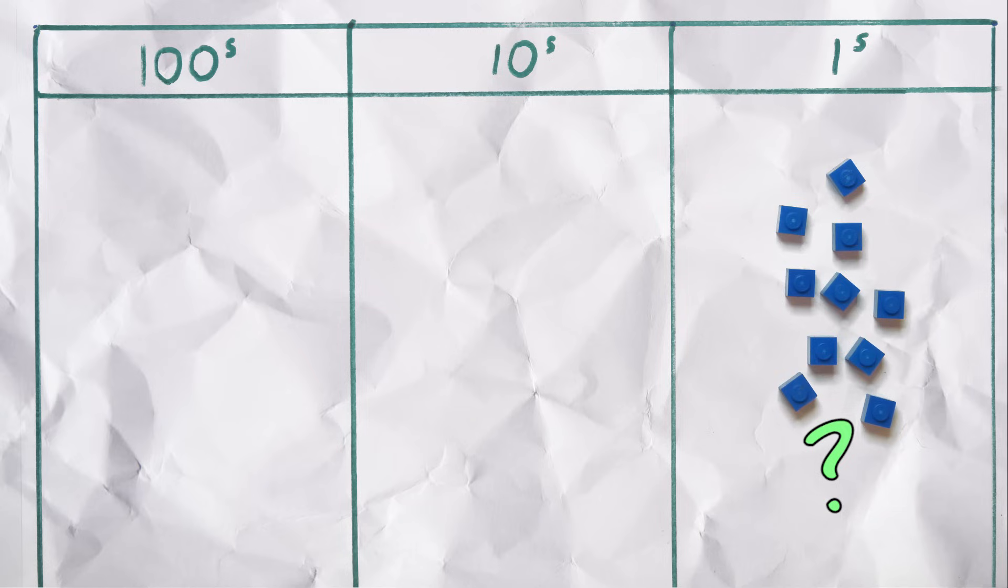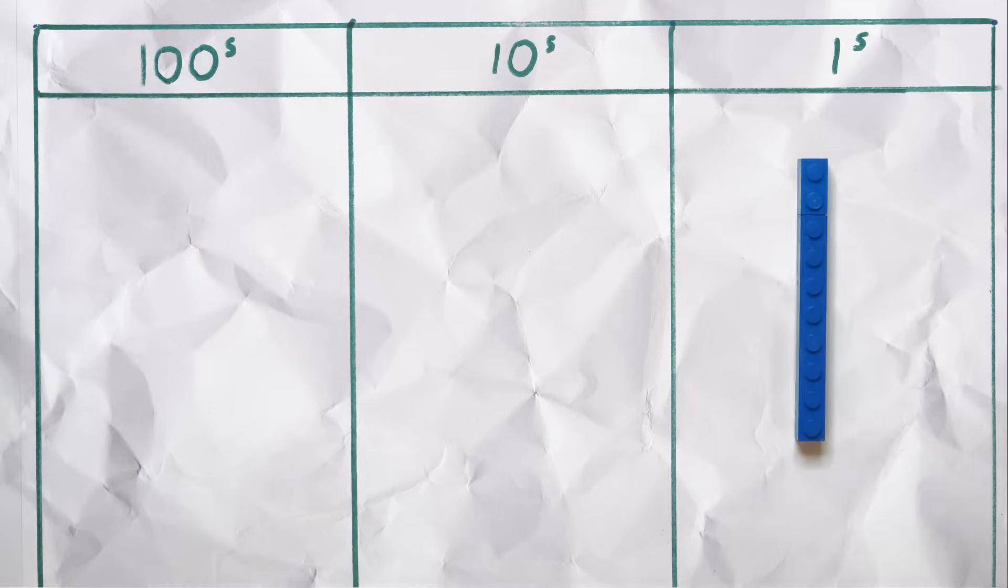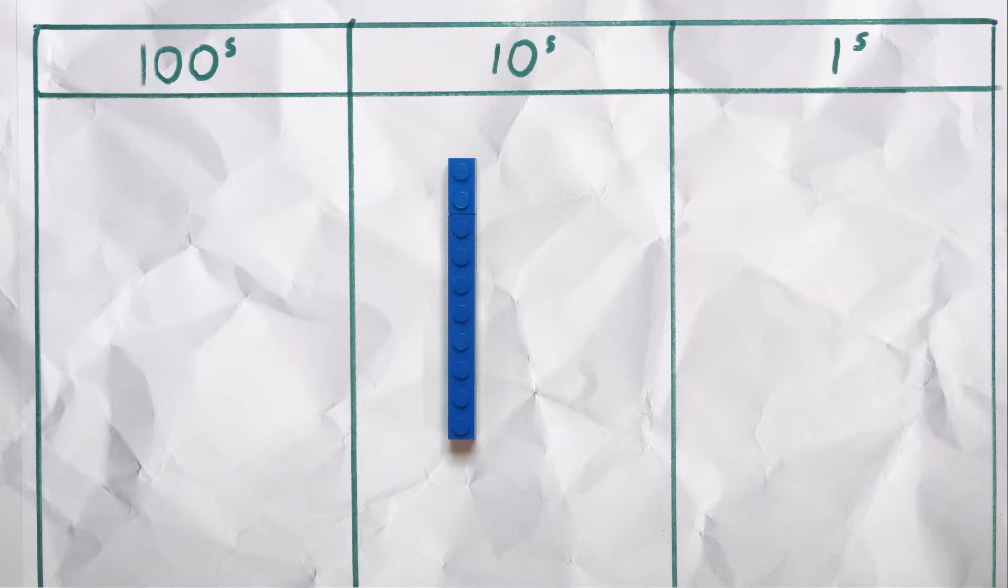But what happens when we reach 10? There is no digit for 10. So instead, we parcel them all up and say we have 1 ten and 0 units, and we write it as 10.